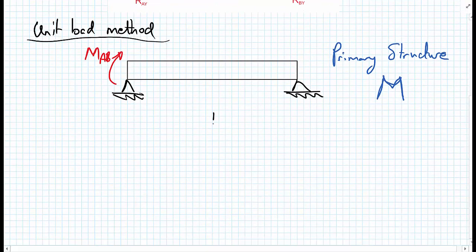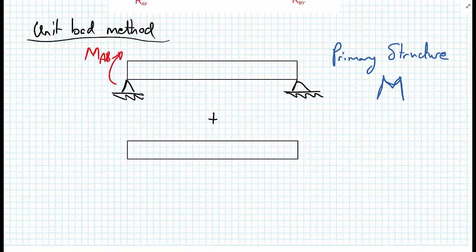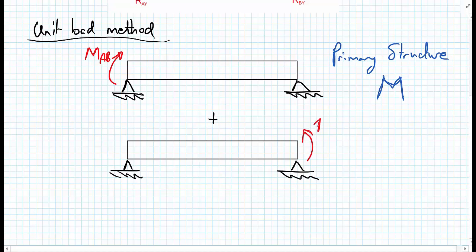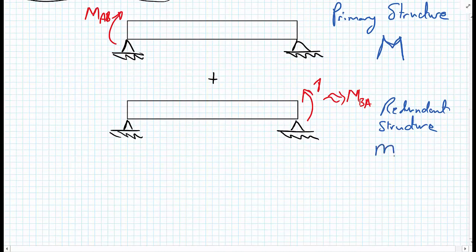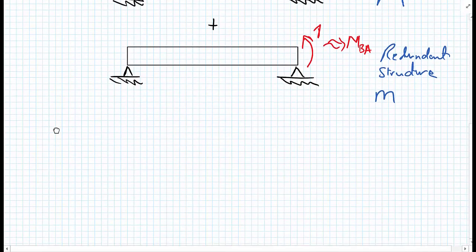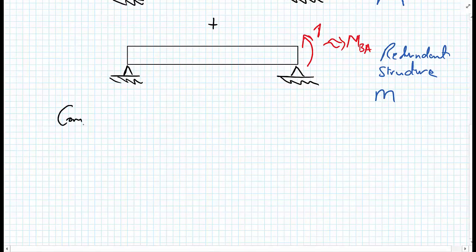We then add a redundant structure — again, simply supported — and apply a unit moment at the right-hand side so we can eventually determine MBA. This would be our redundant or secondary structure. By using the unit load, we calculate another bending moment function, little m. Using those together, we can set up our compatibility equation.